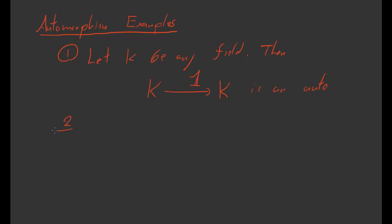The second example isn't quite so trivial, but we've already talked about it. And that's that the map from C to itself, sigma, where sigma is complex conjugation,